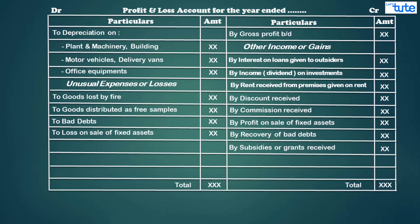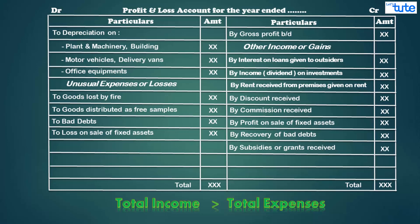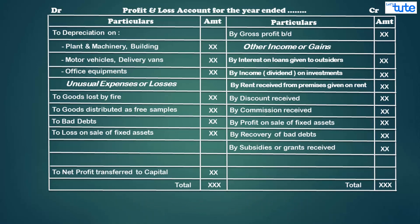The net profit or net loss is found by balancing the profit and loss account. If the credit side is bigger, total income exceeds total expenses — this is known as net profit earned by the business. In the next step, appropriations out of profits — such as income tax or transfer to reserves — are debited to the profit and loss account. Appropriations can only be made after ascertaining net profit. The net profit amount is written on the debit side and transferred to the credit side of the capital account.